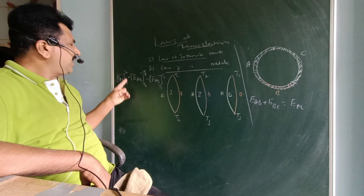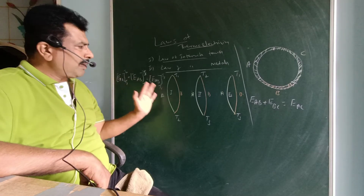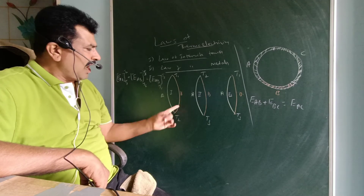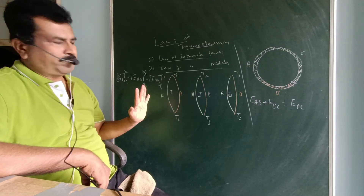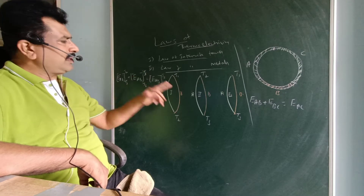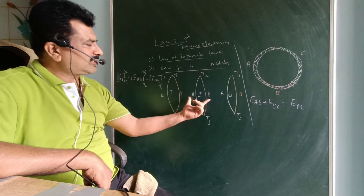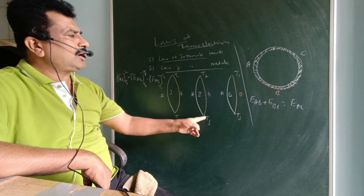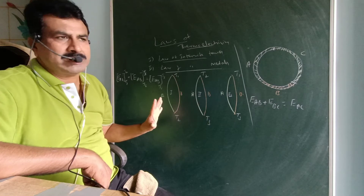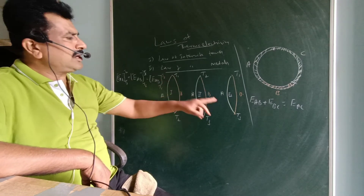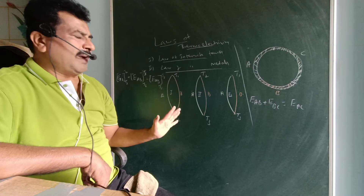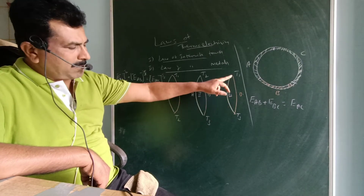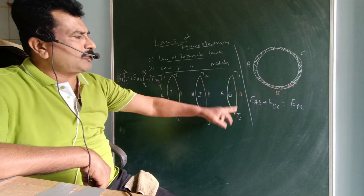E_AB at T1,T2 refers to the same thermocouple of metals A and B at temperatures T1 and T2. E_AB at T2,T3 refers to the same thermocouple of metals A and B at temperatures T2 and T3 at the junctions. E_AB at T1,T3 refers to the thermo EMF produced by the same thermocouple at junction temperatures T1 and T3.